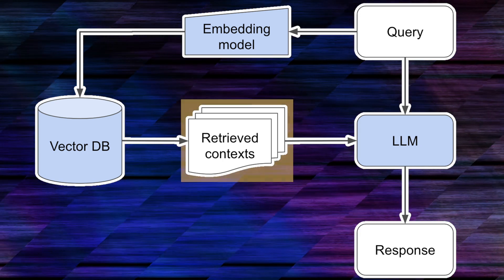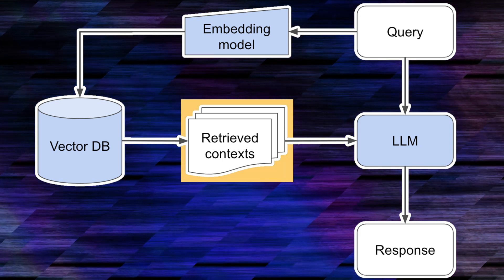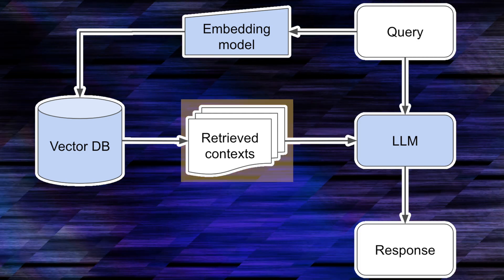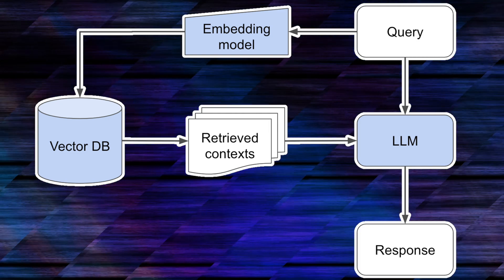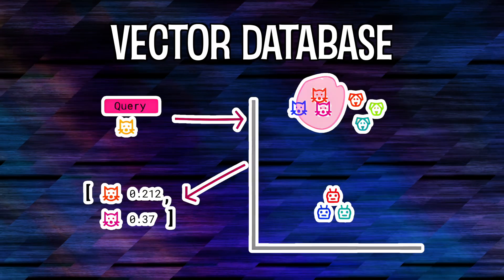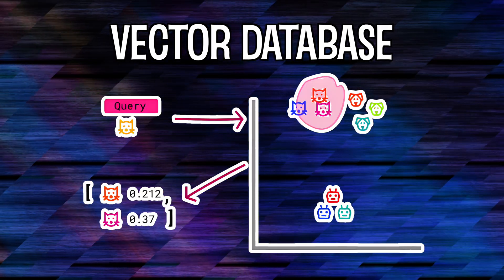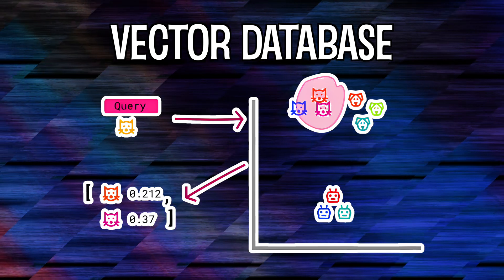In the retrieval stage, the system uses the prepared data to find and retrieve information relevant to the user query. This usually involves semantic search through vector databases. The goal is to fetch the most important information quickly and effectively.